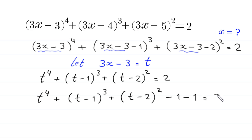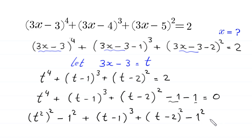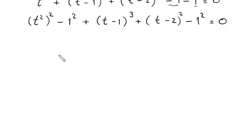So we write: t⁴ + (t-1)³ + (t-2)² - 1 - 1 = 0. Here t⁴ can be written as (t²)², and -1 is the same as 1². By using the algebraic identity a² - b² = (a+b)(a-b), the expression (t²)² - 1² will become (t²+1)(t²-1).